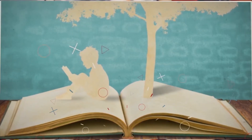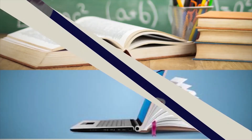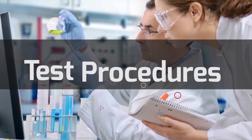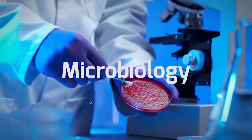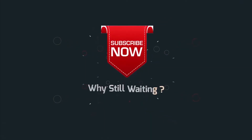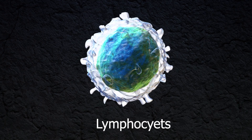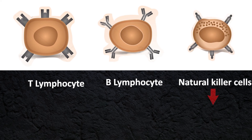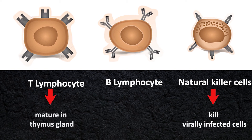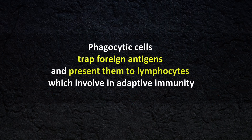Lymphocytes are another type of white blood cells. Functionally there are two types: T and B lymphocytes. There is also another type called natural killer cells, which kill virally infected cells. T cells mature in the thymus gland, B cells mature in bone marrow, and development continues in lymphoid tissue.